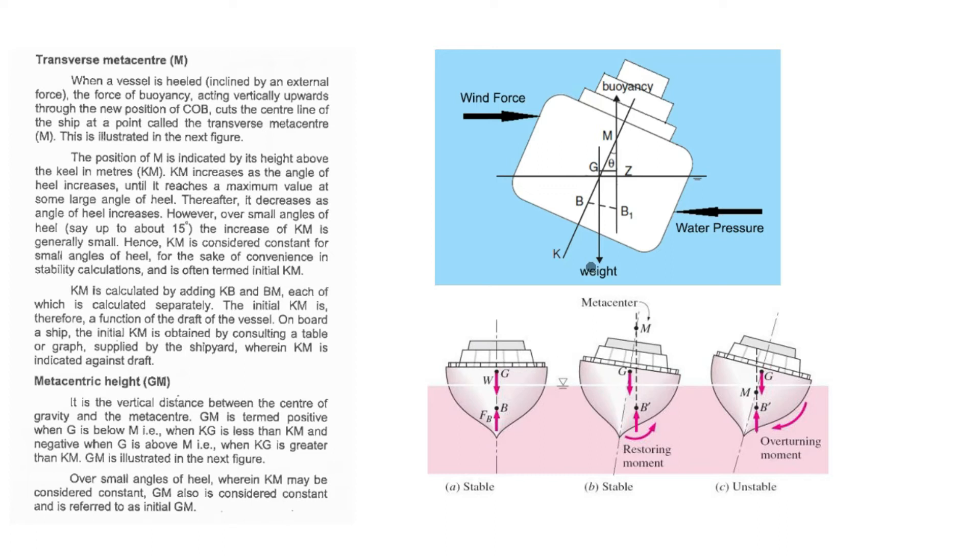So GM is basically the distance between the center of gravity to the metacenter. And this figure shows stable equilibrium. If the center of gravity and center of buoyancy are aligned with opposite forces, this is stable condition, meaning G is below M. But if M comes below G, this creates unstable equilibrium. And the angle at which this happens is called angle of loll.